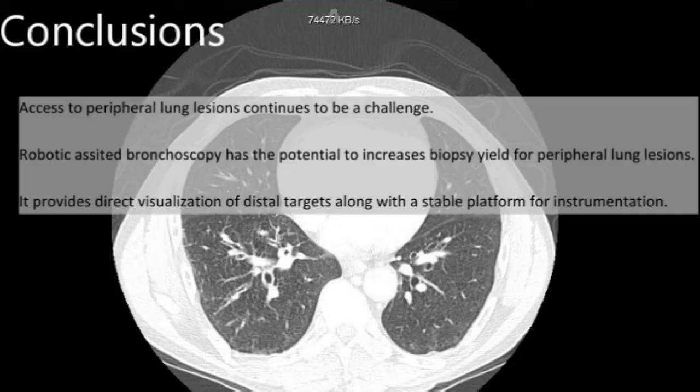In conclusion, robotic-assisted bronchoscopy provides an additional option for diagnosing peripheral lung nodules. Precise navigation of the bronchoscope under direct vision can provide advantages for a difficult-to-access nodule.